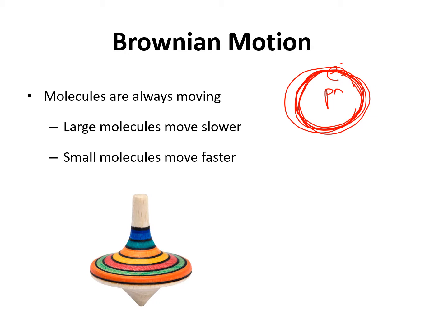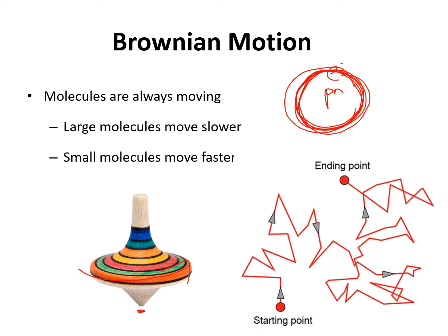An example would be like a top — when a top is spinning really fast, it looks almost as if it's standing still, but it moves a little bit and doesn't stay in one spot. The movement of atoms is very random like that. An atom will start in one place and, because of that jiggle due to electrons spinning around the nucleus, it will move in a random pattern. Large molecules move more slowly because they have more mass, and small molecules move faster. Brownian motion describes the random motion of molecules in a liquid or gas.